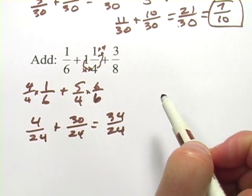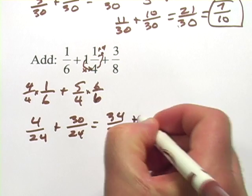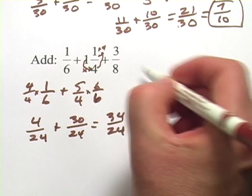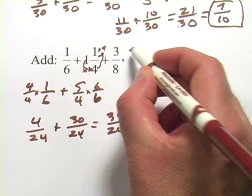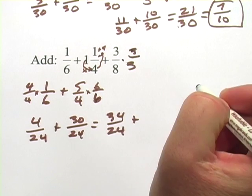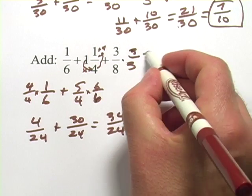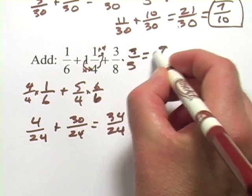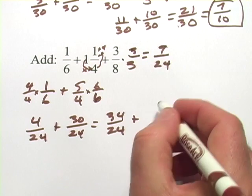Now I'm going to add the 3 eighths here. But before I add it in, I think I'm going to go ahead and multiply that by 3 over 3. Because 3 times 8 is 24. And then I will get 9 across the top and 24 on the bottom. So this is really 9 24ths.